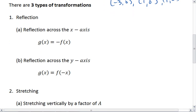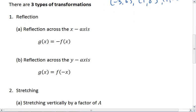The first type of transformation we're going to talk about is a reflection. To reflect across the x-axis, what we want to do is we want to change the signs on all of our outputs.